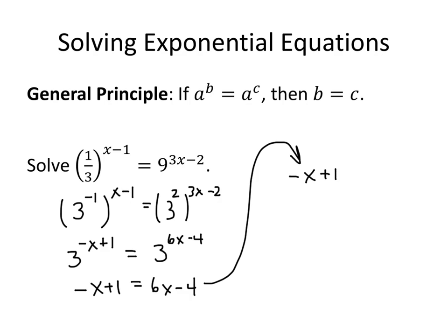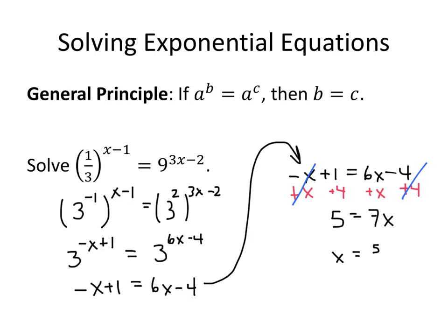We have negative x plus 1 equals 6x minus 4. I'll add x to both sides and add 4 to both sides. That gives me 5 equals 7x, and so the solution is x equals 5 sevenths.